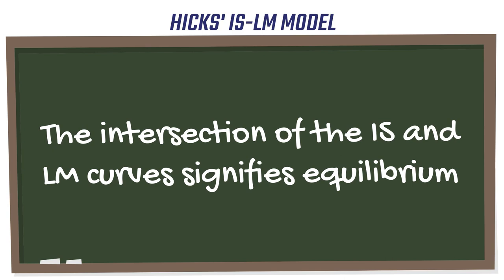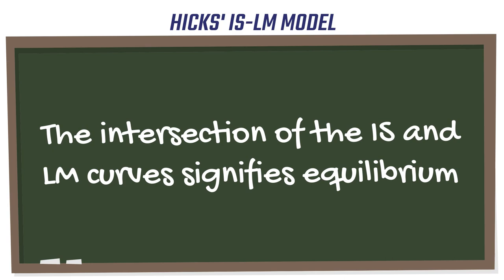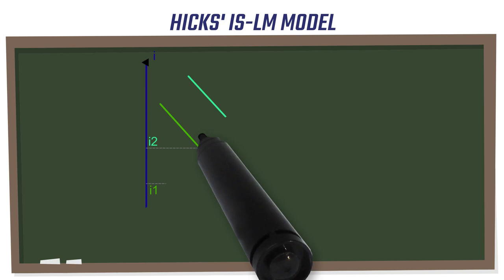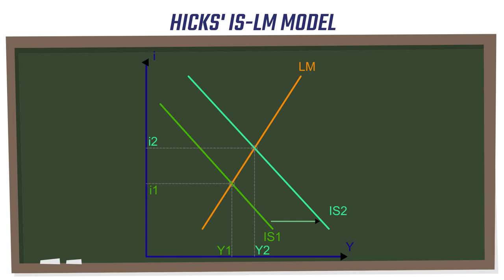Hicks IS-LM model is designed to show the relationship between the market for economic goods and loanable funds, which is also known as the money market. This model is a common classroom tool in macroeconomics and is sometimes used to assess macroeconomic stabilization policies as well as economic fluctuations.